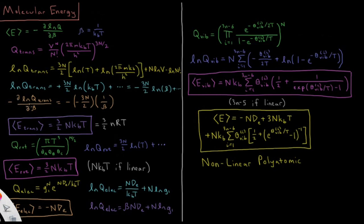The negative partial derivative with respect to beta of ln(Q_trans) is minus times minus 3n/2, and d/dβ of ln(β) is 1/β. The minuses cancel and we get 3n/(2β). Since β = 1/kT, 1/β = kT, so the translational energy is 3/2 · nkT. Using the ideal gas law, nk equals the number of moles times the gas constant R, so E_trans = 3/2 · nRT. Each of the x, y, z modes contributes 1/2 · nkT for a total of 3/2 · nkT.